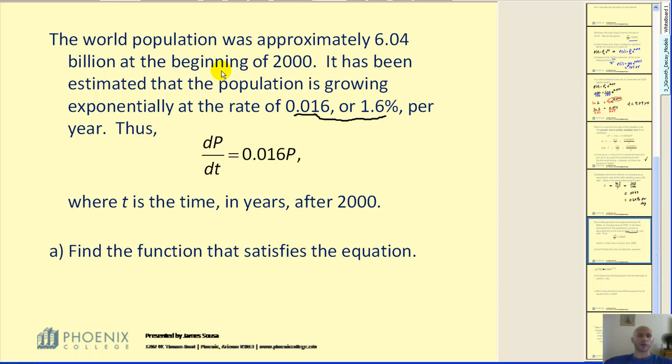Well, if this is the case, then we know that the derivative of p with respect to t would be 0.016 times the function p.